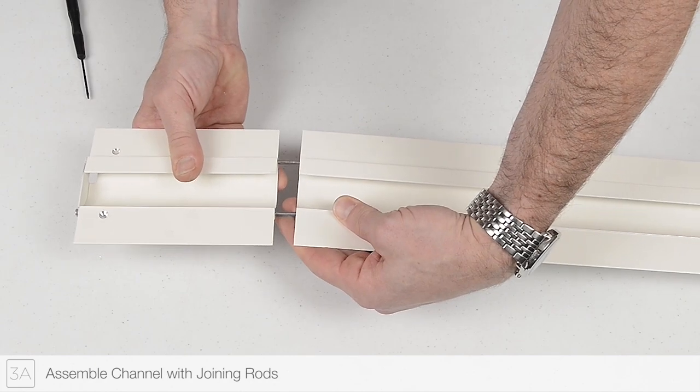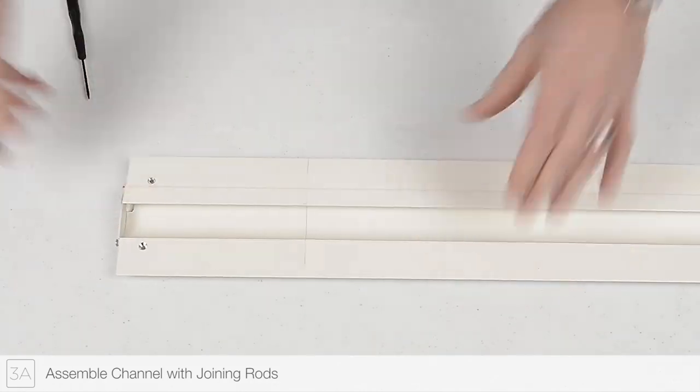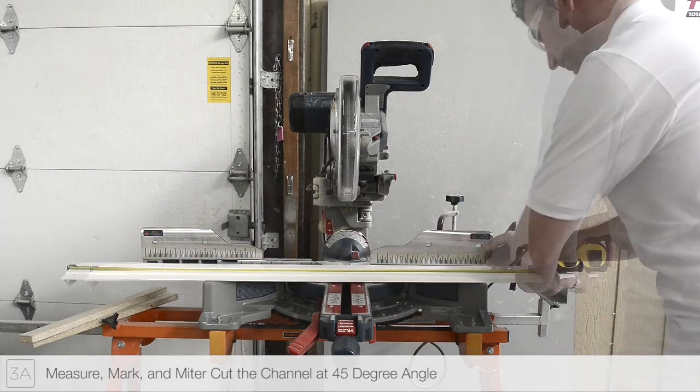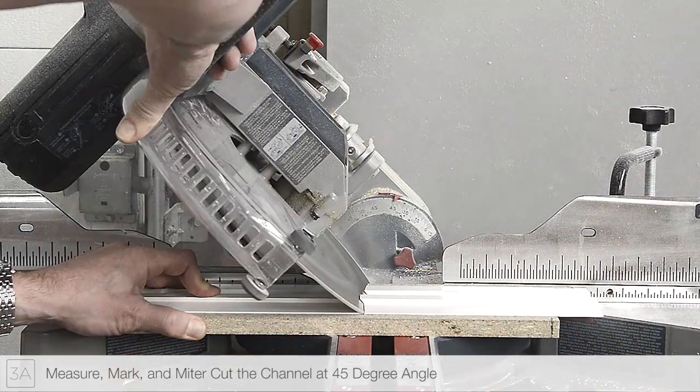Using the joining rods, assemble the other channel. Measure and mark both reveal channels using the measurements from previous steps. Miter cut each of the channels to length.